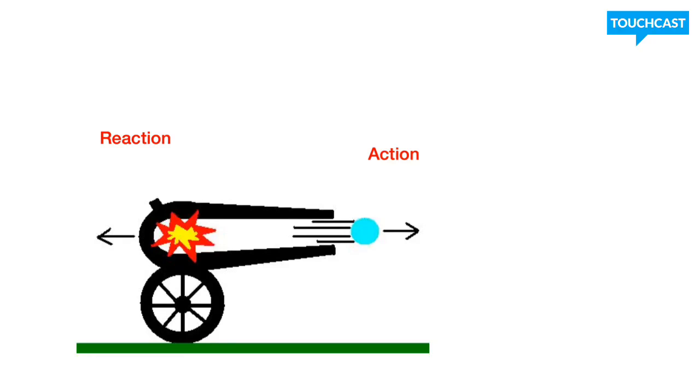A force pushes the cannonball out, going that one direction. An opposite force pushes on the cannon, making the cannon go backwards.